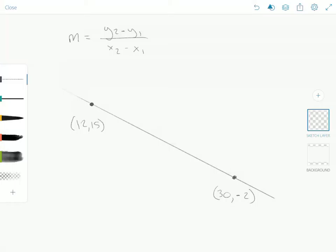Here's a quick example of the slope formula in action. We've got a line on the coordinate plane. What is the slope of this line?